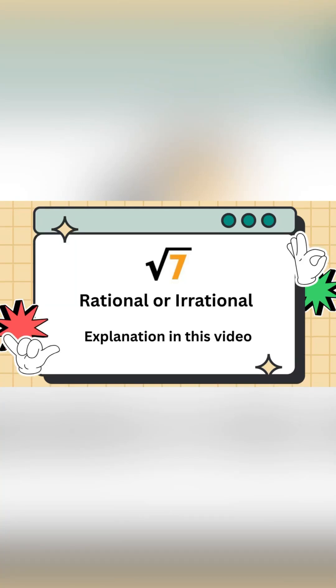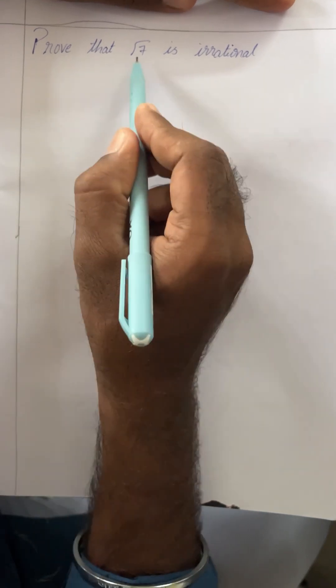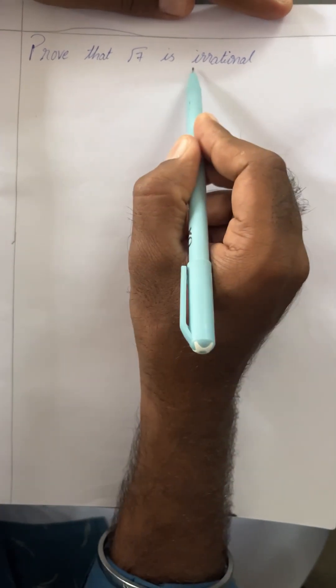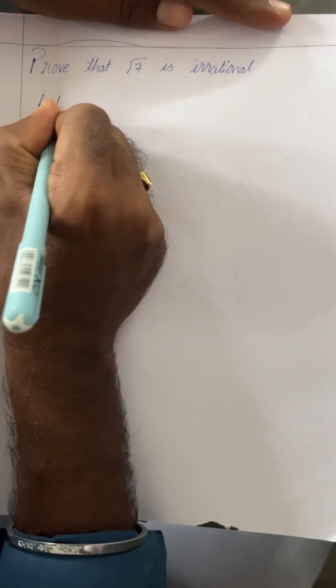Root 7 — whether it is rational or irrational, we will see the explanation in this video. The root 7 is irrational only, and now we have to prove that.